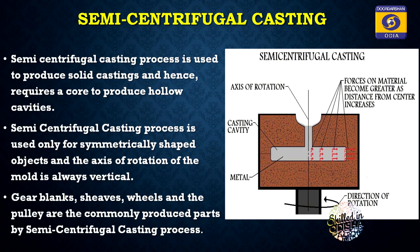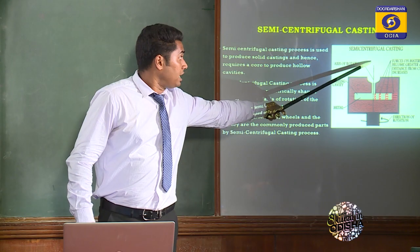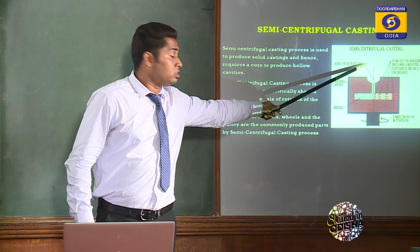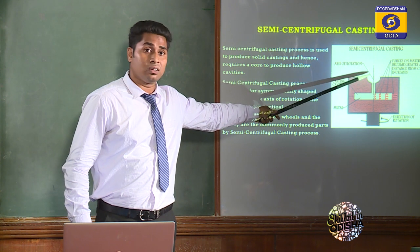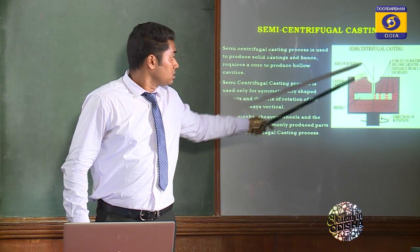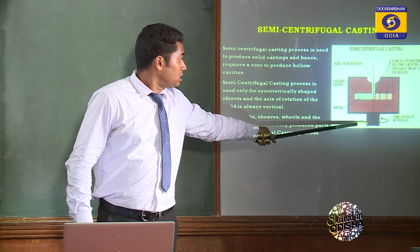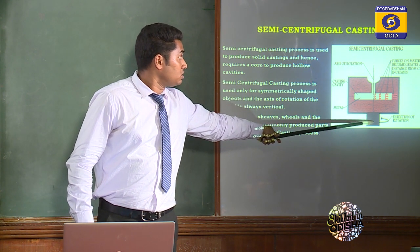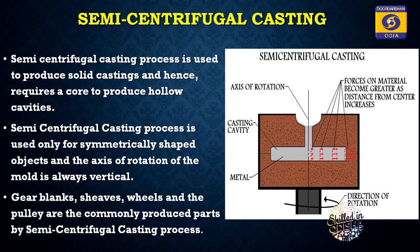This is the Semi Centrifugal Casting Process figure. You can see the axis of rotation is vertical. The direction of rotation is shown, and the mold cavity is filled with molten metal.